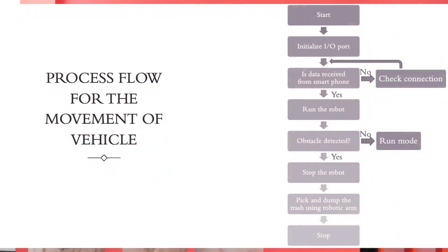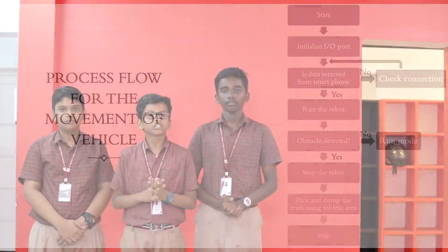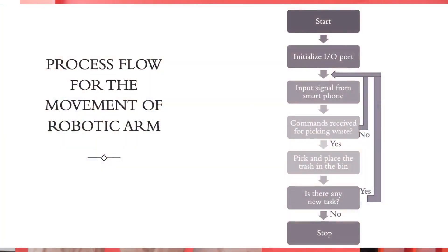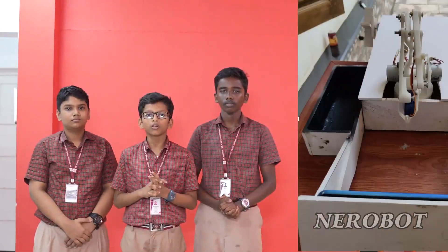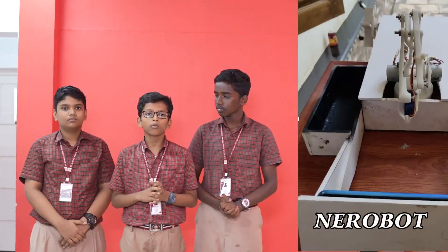Following is the flowchart of the vehicle. The vehicle stays idle until a command is received. When a command is received, it begins its functions and moves. Following is the flowchart of the movement of the robotic arm. The same applies for the robotic arm.